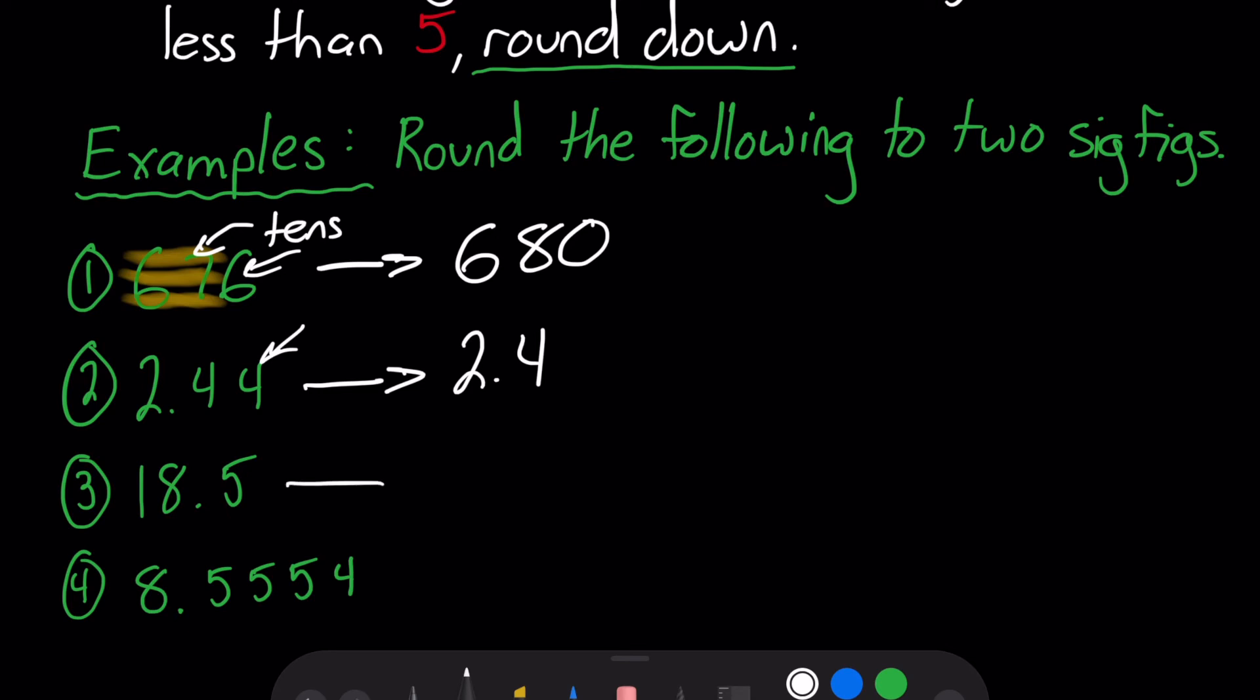The next one we have 18.5. So this five right here that we are rounding off, because of the one and the eight, those are going to be our significant figures. Since this is a five we're rounding off, we will round 18 up. If that number we're rounding off is five or greater, we must round up. So 18.5 now turns into 19.